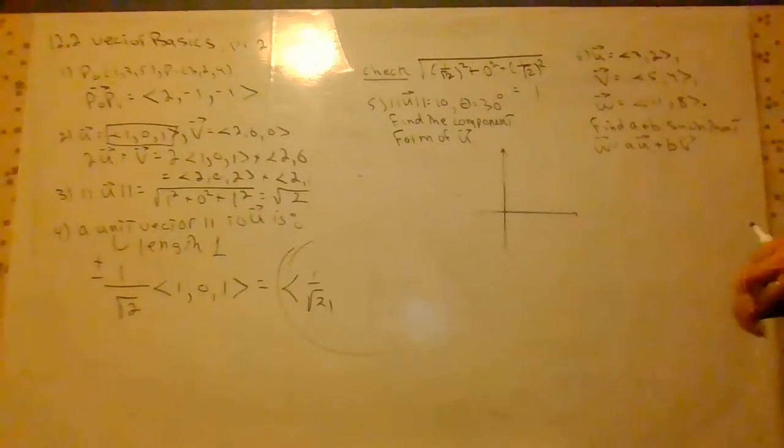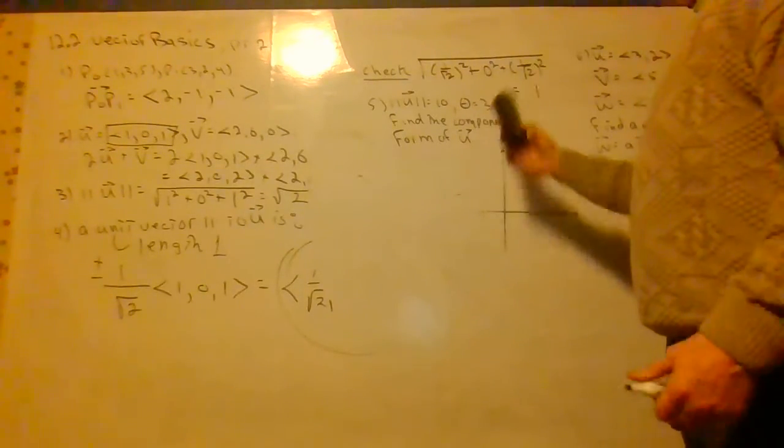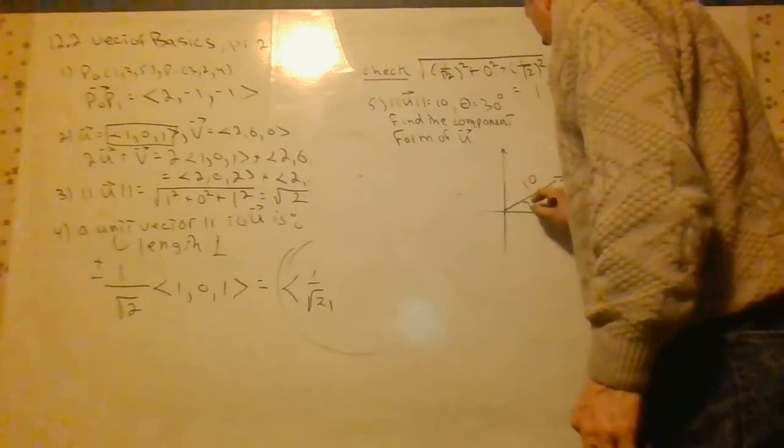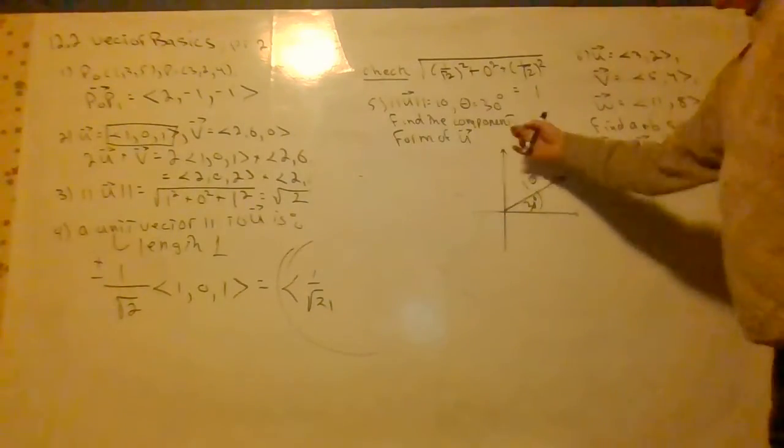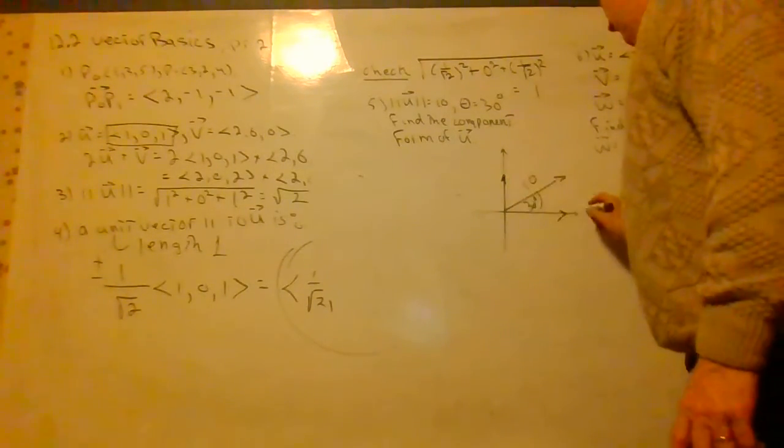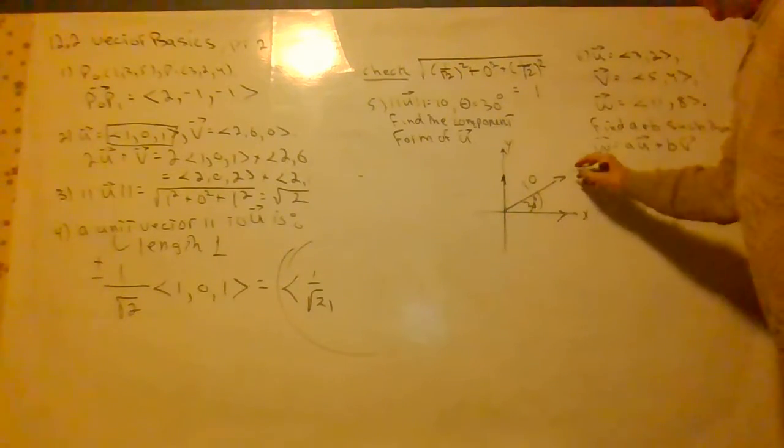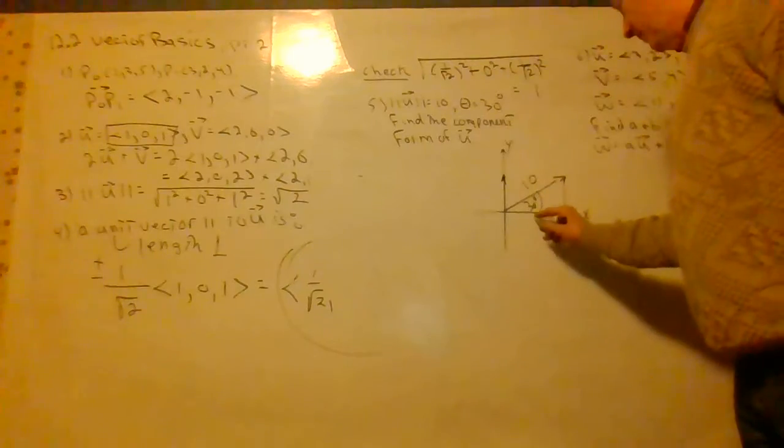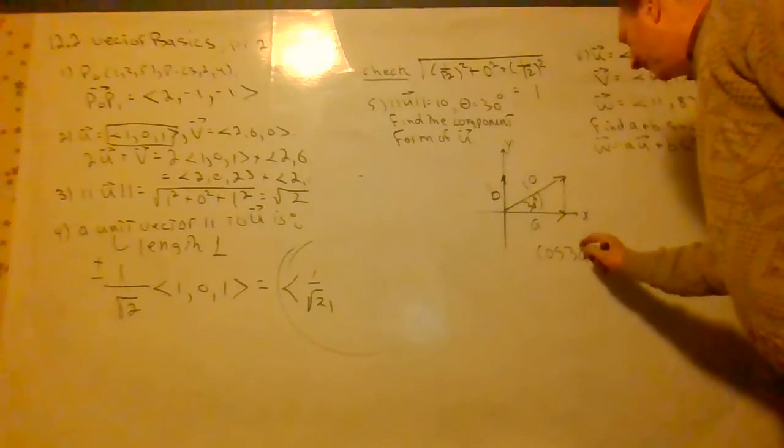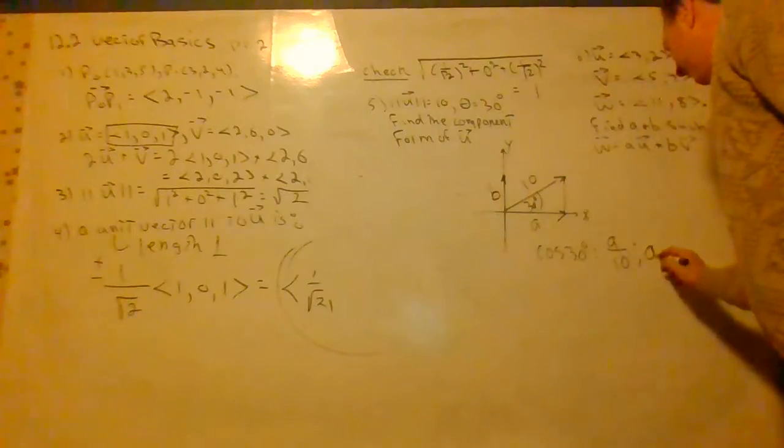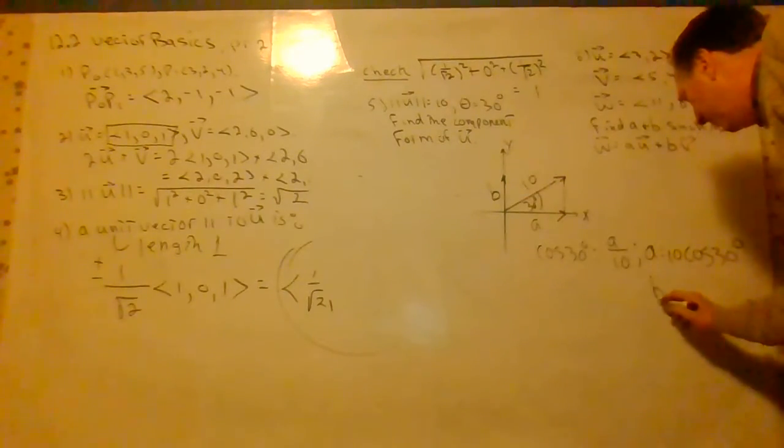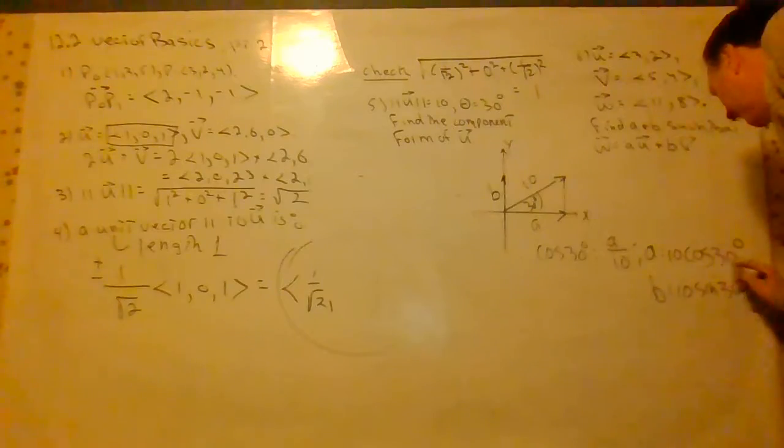Question number 5. We have a magnitude of 10 and an angle, a standard trig angle, of 30 degrees. So we can actually plot this vector here. That's of length 10. That's 30 degrees. It says, let's write it in component form. This is very useful in physics, actually. What we want to do is write two components, an x and a y component. Well, this is just a right triangle right here. And you can call this a, call this b if you want. And it turns out cosine 30 is a over 10. a is 10 cosine 30. And likewise, b is equal to 10 sine 30.